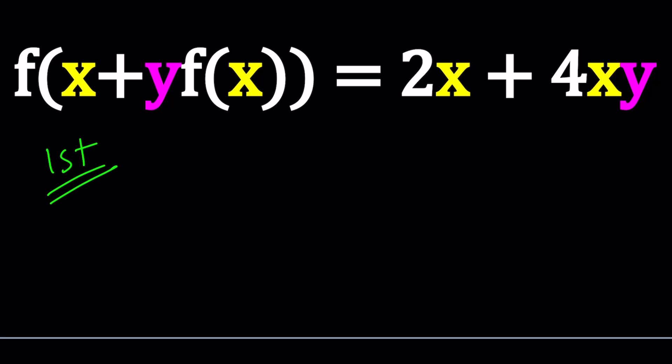So, for my first method, I want to go ahead and replace x with 1, and when I do, I get f(1+y) times f(1) equals 2 times 1, which is 2, plus 4 times 1 times y, which is 4y.